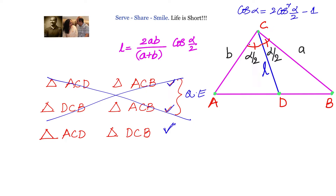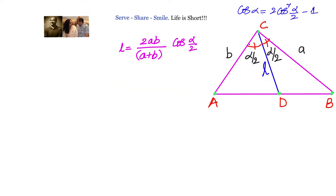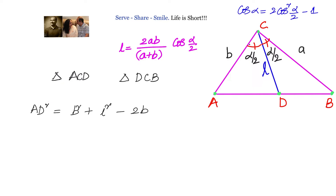Let's go ahead and consider triangles ACD and DCB. From triangle ACD, applying the law of cosines, we can write: AD² = B² + L² − 2BL·cos(α/2).